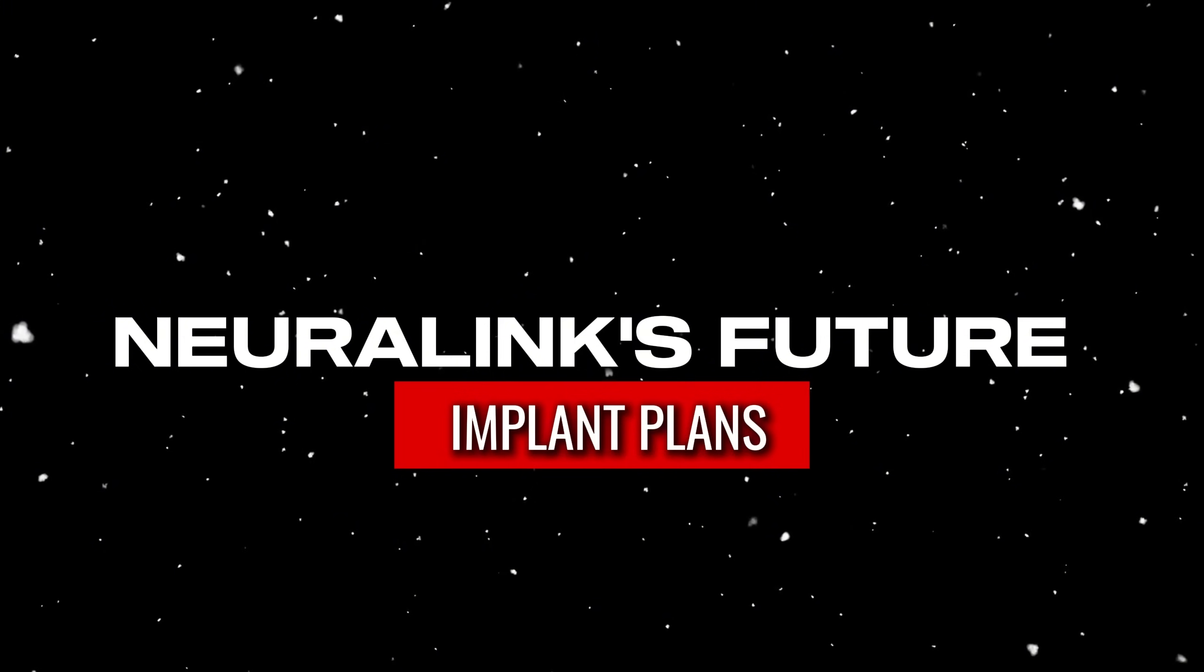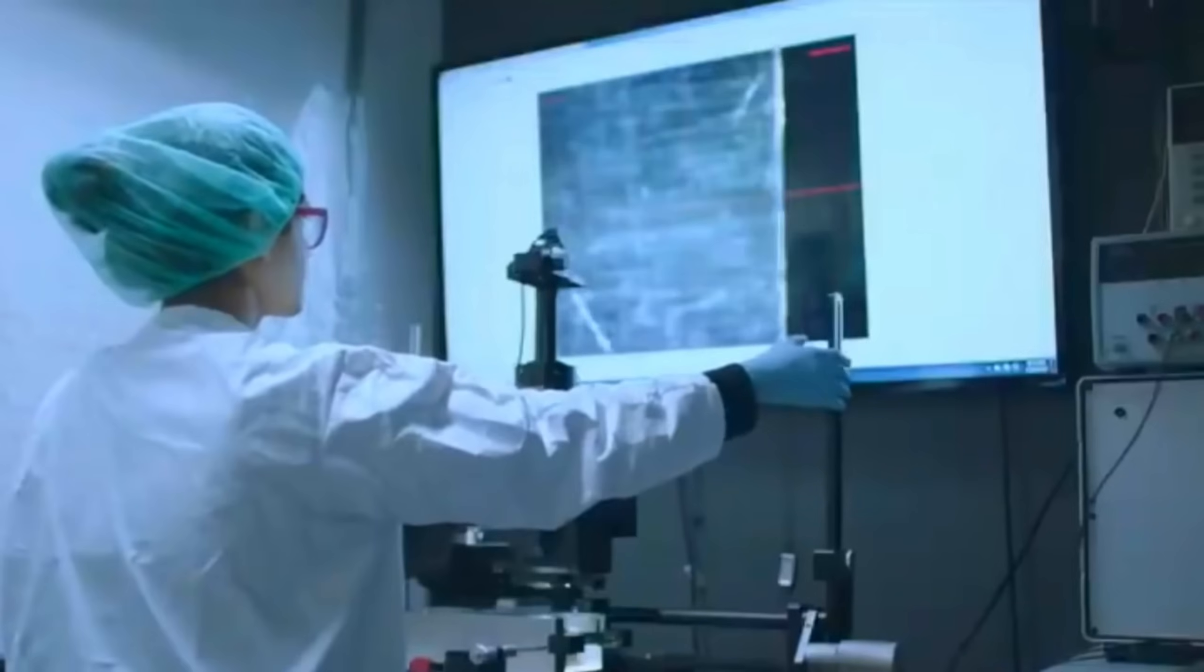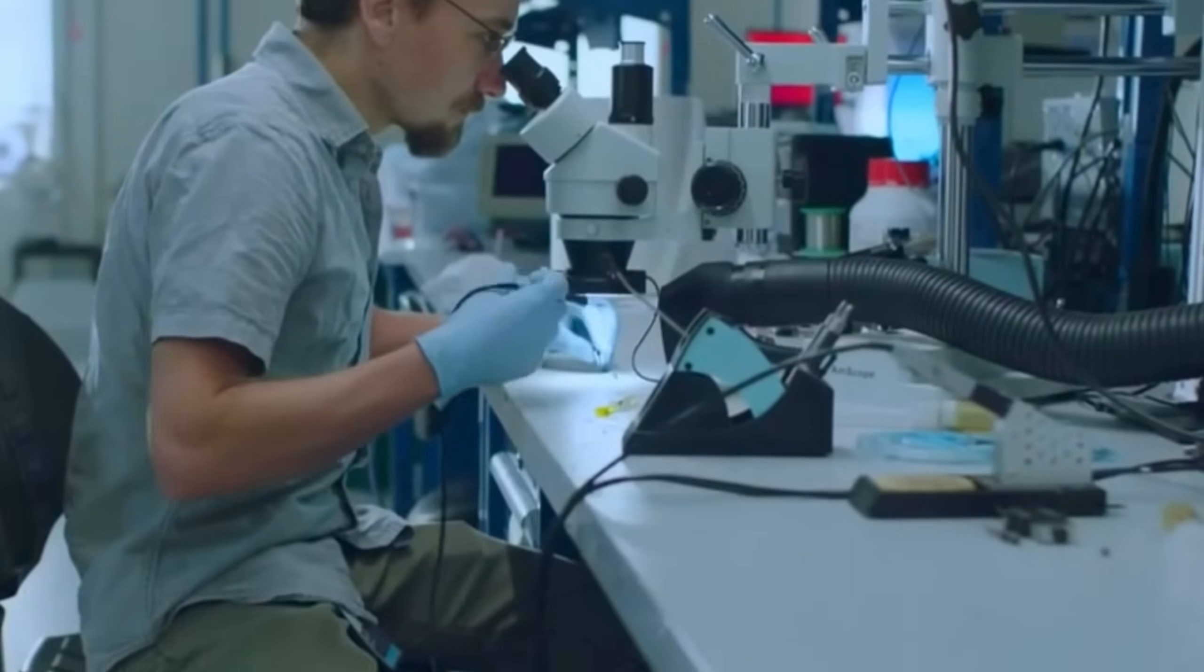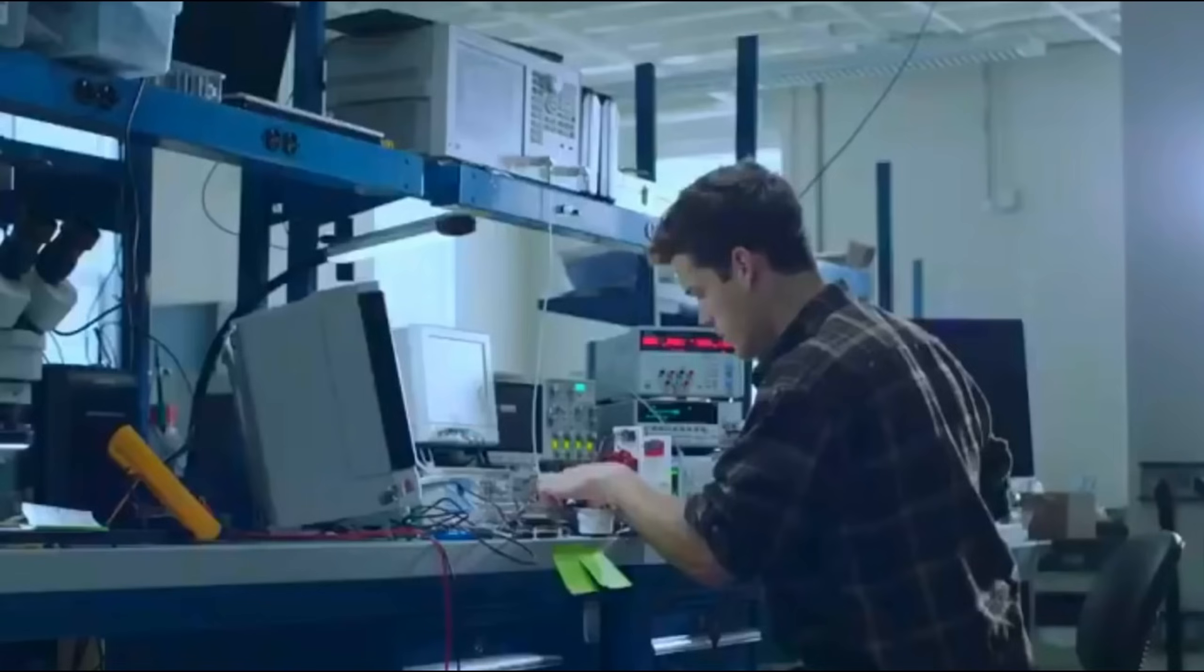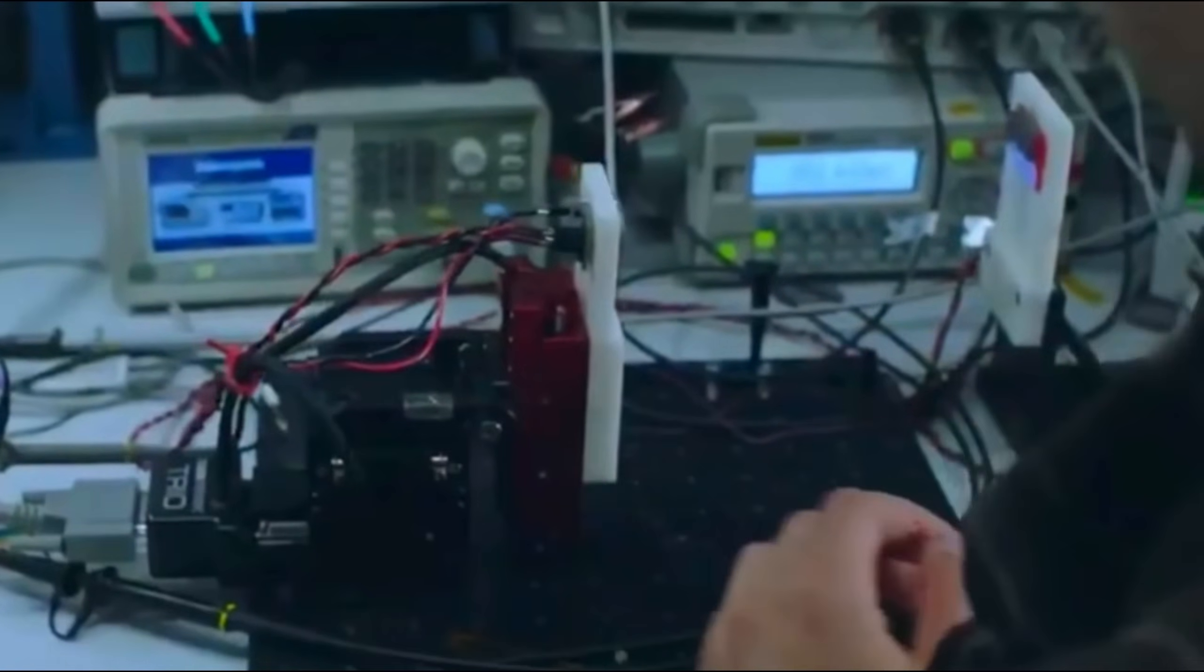Neuralink's future implant plans. Even with some problems, Neuralink has over a thousand volunteers ready for more surgeries. Elon Musk hopes to put his chip into eight more patients by the end of the year, but they still need approval from the authorities. It's amazing how fast Neuralink is working to help lots of people.